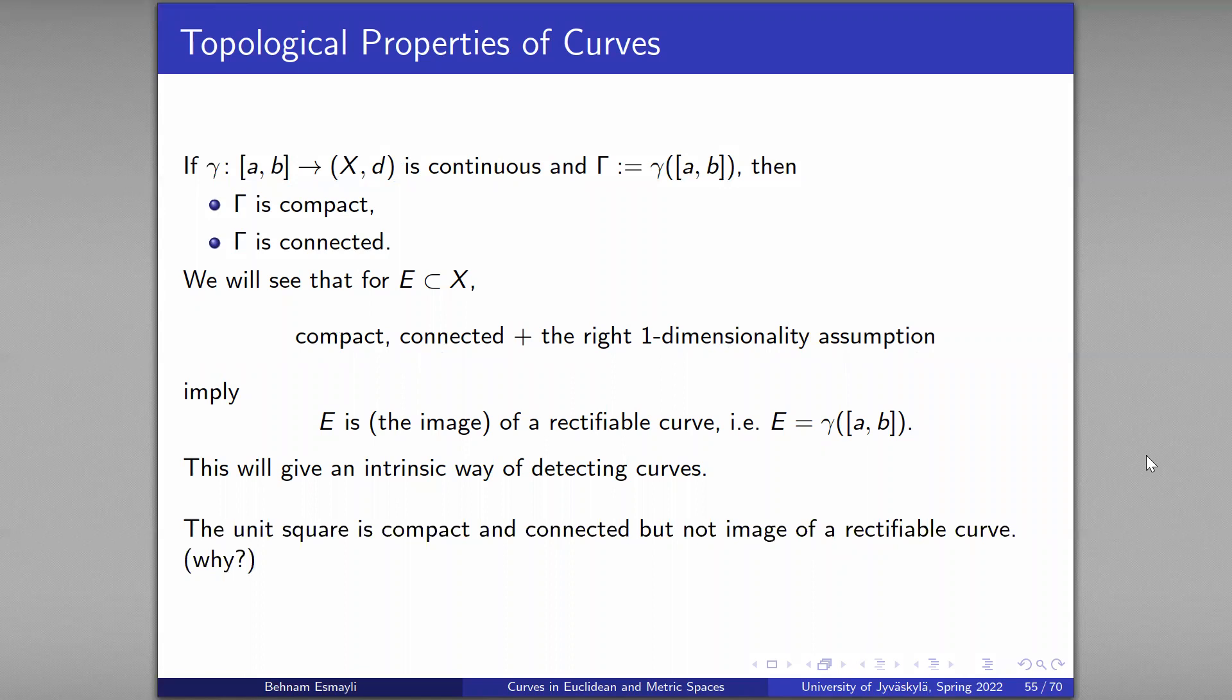First, let's see that obviously some sort of one-dimensionality assumption is necessary. The unit square in R^2 is compact, it is connected, but it is not image of a rectifiable curve, although we saw that it is an image of a continuous curve, the so-called space-filling or Peano curves. All of these have been discussed in previous videos.